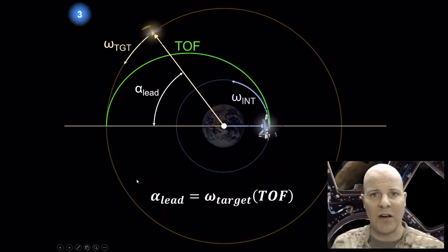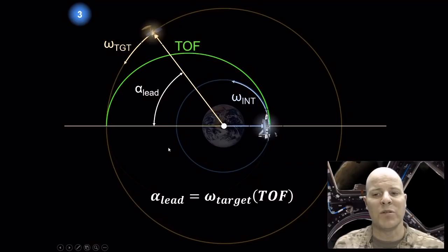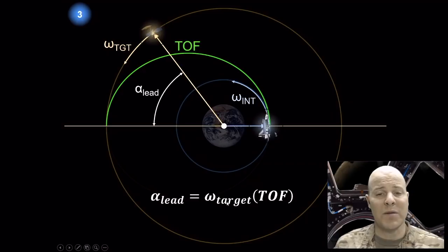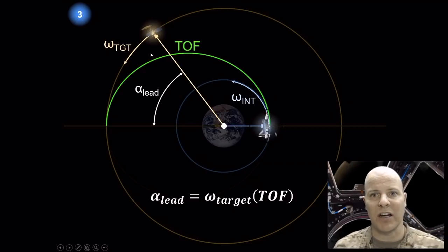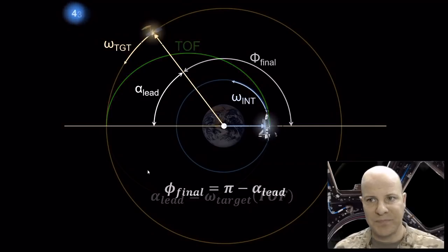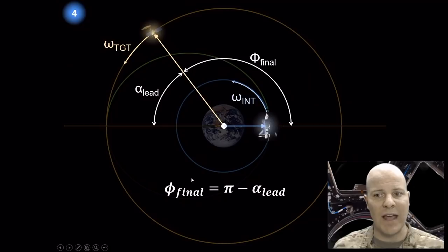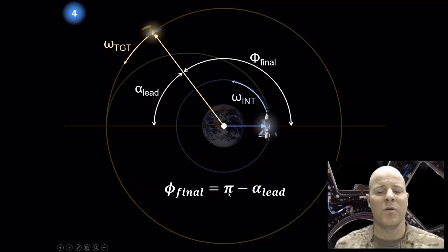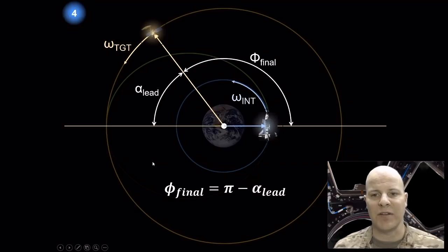Step three: how do we calculate our alpha lead, or lead angle? This is how much angular distance we need between the interceptor and target when we initiate the maneuver. It's related to the angular velocity of our target spacecraft multiplied by the time of flight — giving us the angular distance we need to lead our spacecraft by. We then use phi final, defined as the relationship between pi (180 degrees) and alpha lead, to find the actual required angle.